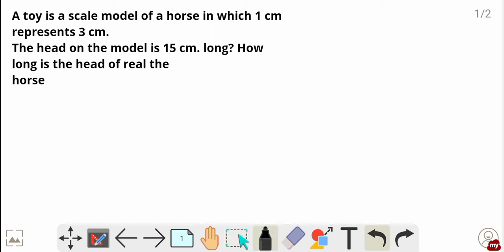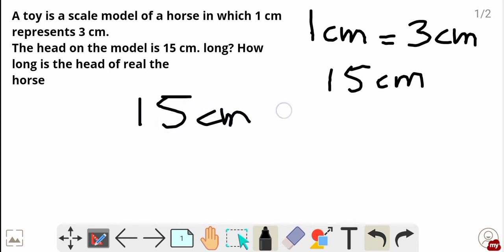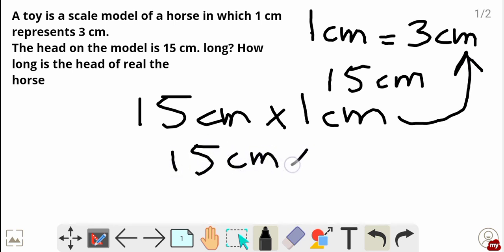Let's see the answer. We have the condition 1 centimeter equals 3 centimeter, and we have the model of 15 centimeter. So we have to calculate the length of real horse head. We have to multiply 15 centimeter by the scale factor. 1 centimeter equals 3 centimeter, so 15 centimeter multiply by 3 centimeter, it's 45 centimeter. So the real horse head is 45 centimeter long.